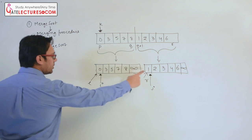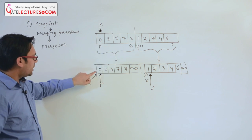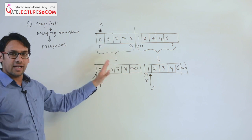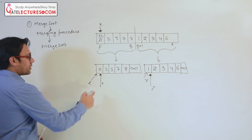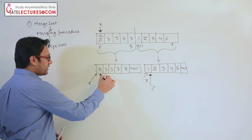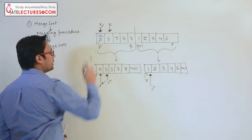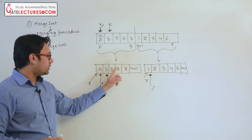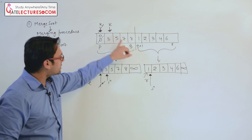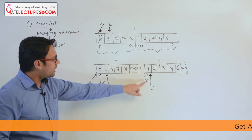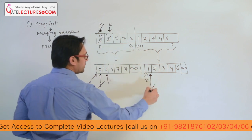Initially k is pointing to index location p. We have 0 and 1; since 0 is less than equal to 1, we copy 0 here and because we copied from the left array we increment i. So i moves forward and k moves forward. Now compare the next values: 1 is less than 3, so we copy 1 here and increment j. So 1 is placed and j advances.